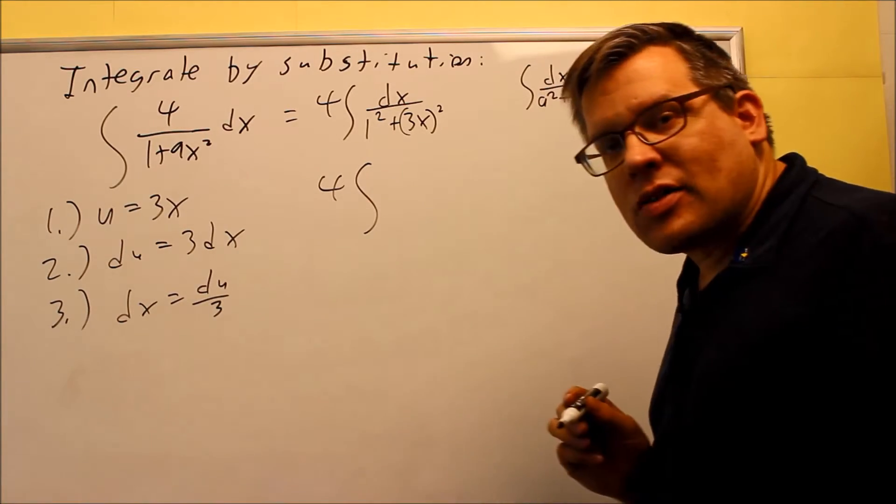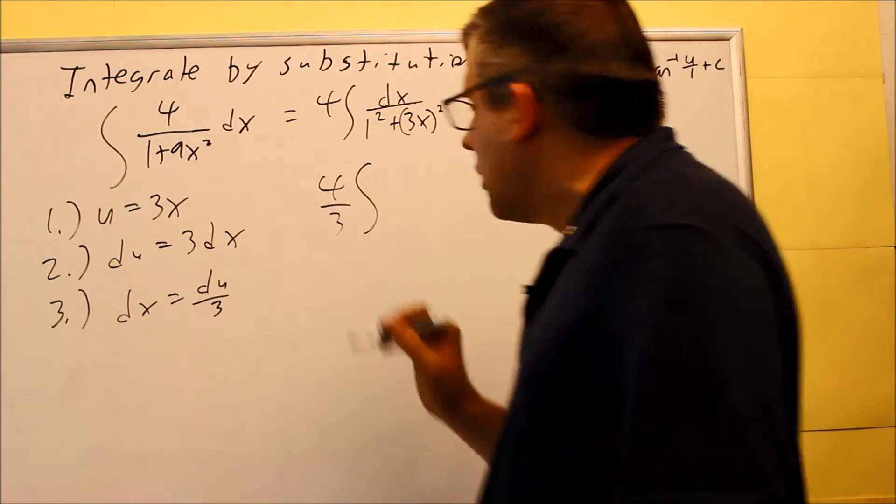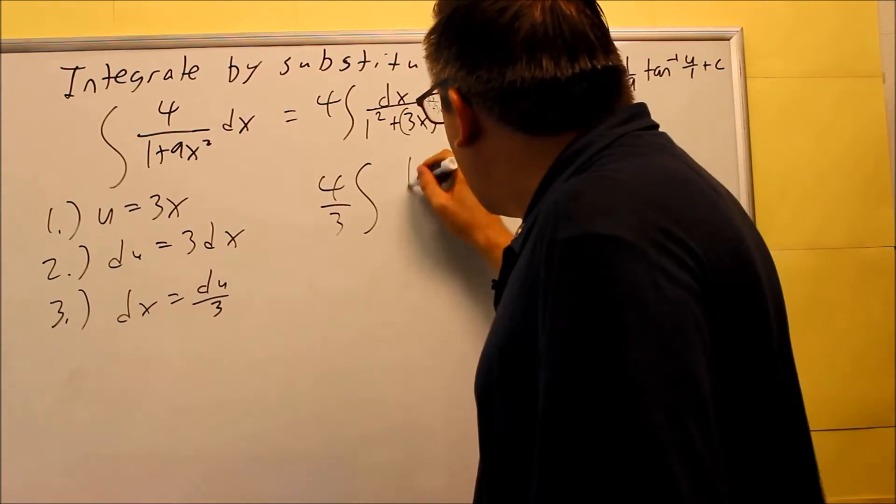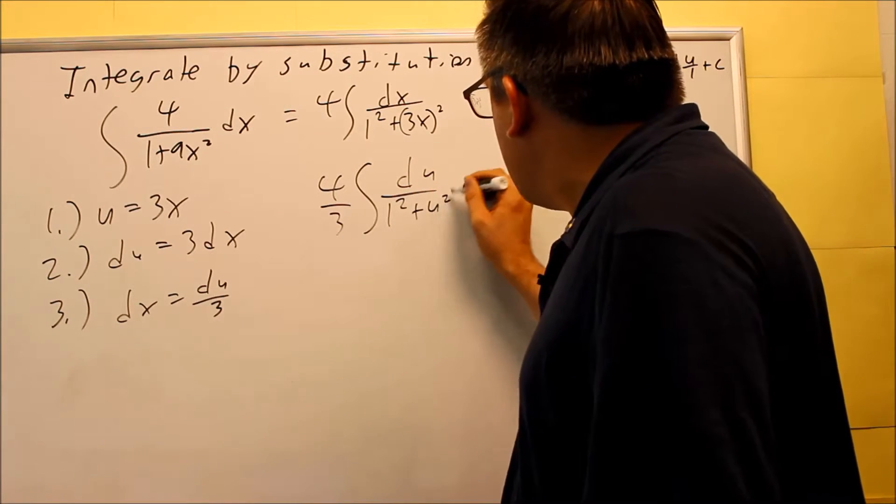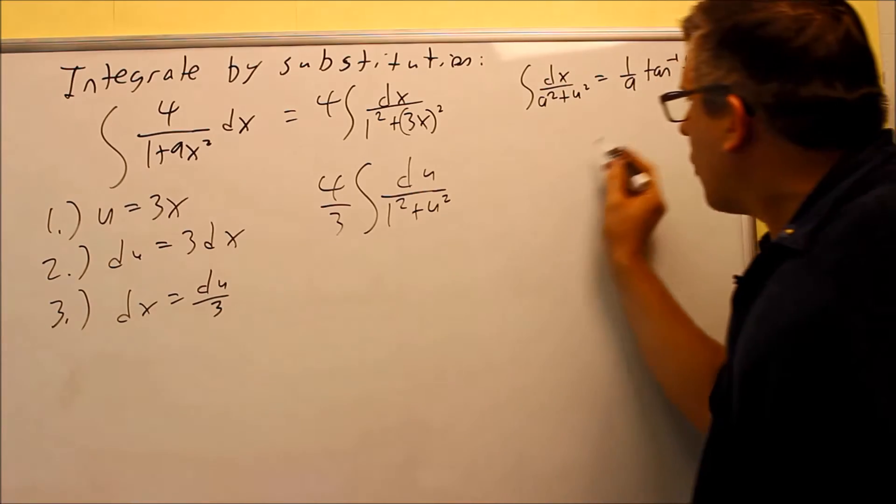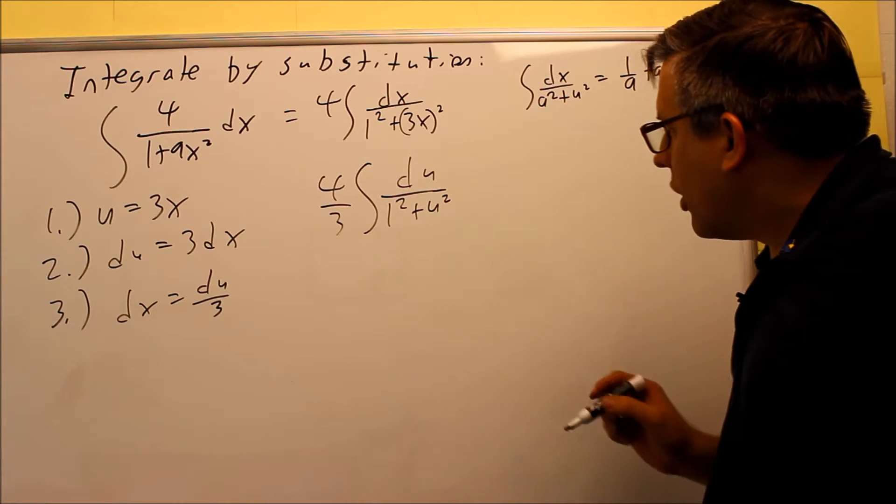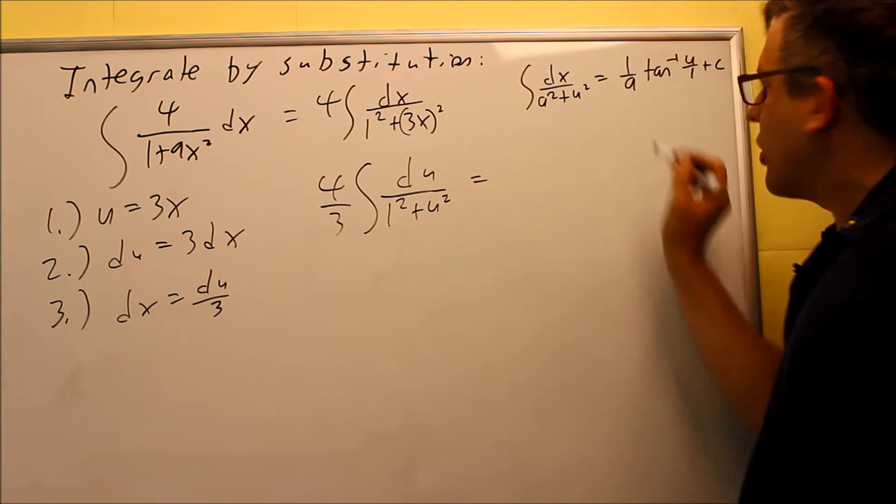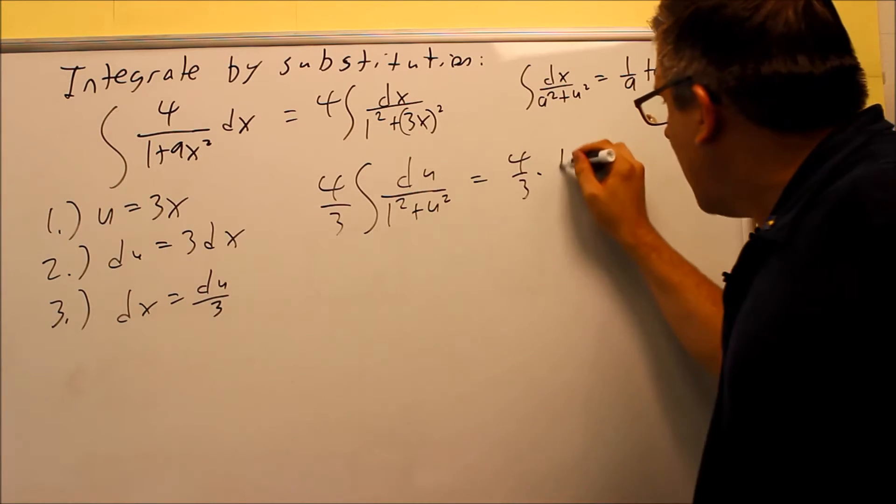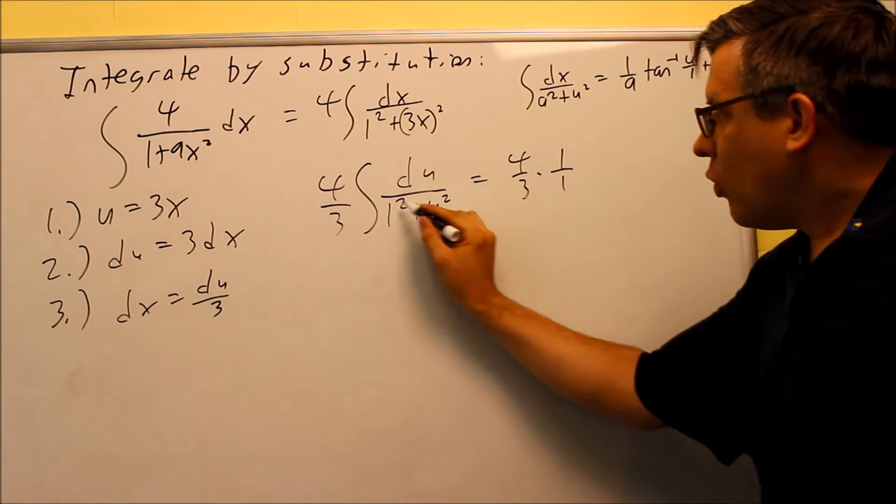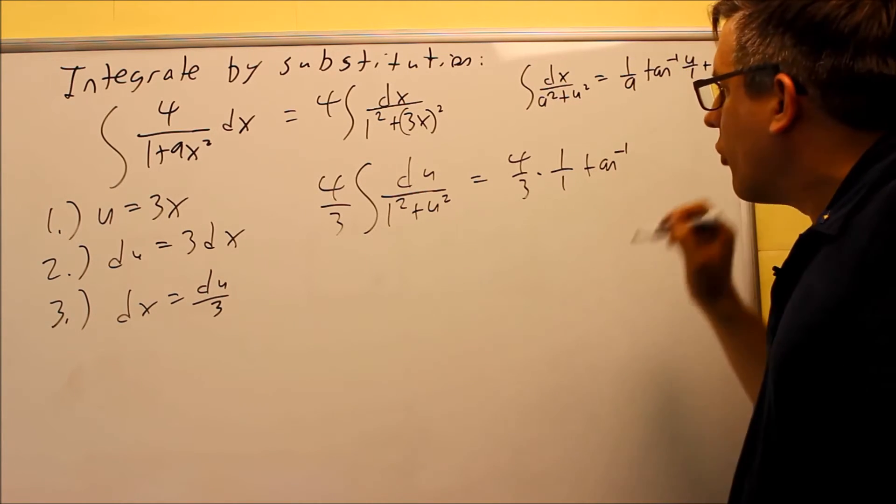Then I have du over 1 squared plus u squared. And then now we have it matching up with this right here. Your a is going to be the 1. So I'm going to follow this particular formula in here. I have a 4 thirds, and then I'll apply the formula. I have a 1 over 1 here. The a is going to be your whatever number you have there. And then I have inverse tangent of u over a.